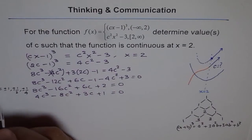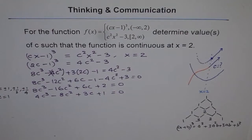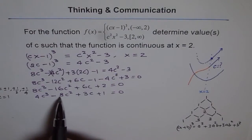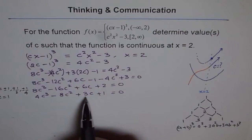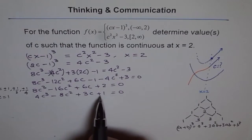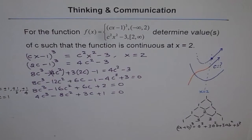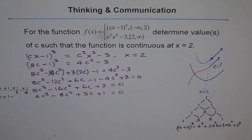Let's plug in c equals 1 first. We get 4 times 1 is 4, minus 8 is minus 4, plus 3 is minus 1, plus 1 is 0. It works! So c equals 1 gives a factor, and that factor is c minus 1. Since the left side equals 0 when c equals 1, we have confirmed c minus 1 is a factor. To find the other factors, we can use long division.